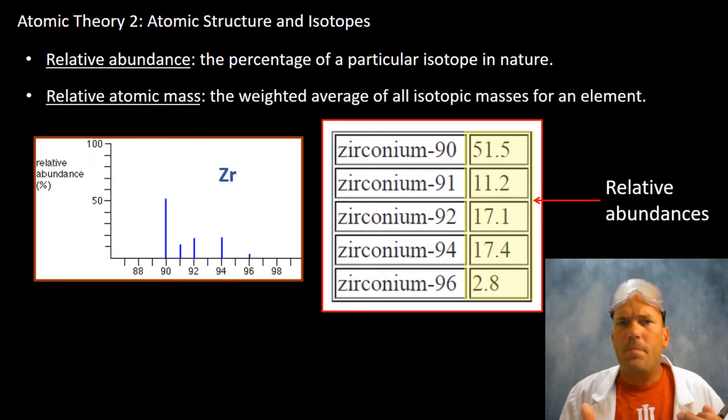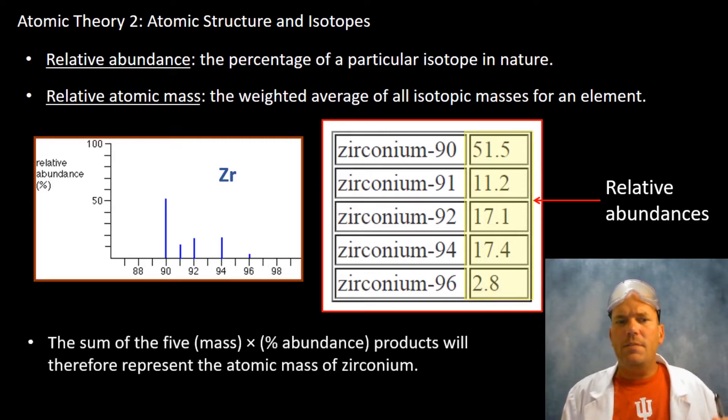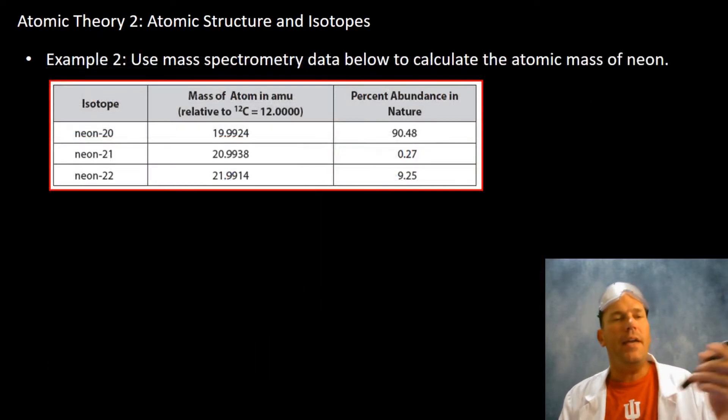Zirconium-90 is over half of all zirconium in nature, and then zirconium-96 there's less than three percent. What you're going to need to do is multiply the mass by the percentage, and that percentage you're going to express as a number with a decimal. 50 is 0.5, and you're going to take those and add them all up. That's going to be your weighted average. It's basically the product of the mass times the percent abundance for each isotope, and then add those all up.